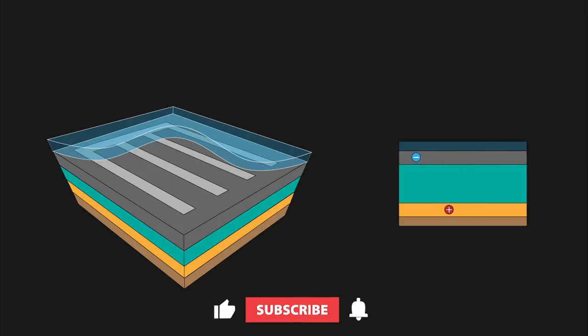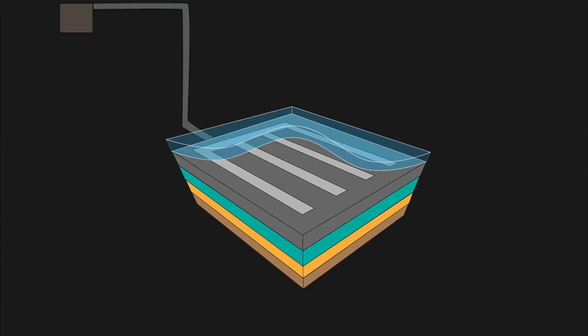The positive charged anode attracts negative charges like electrons, while the negatively charged cathode attracts positive charges. In modern devices, these electrodes are built into the device by engineering the material to have an excess positive and negative charges.